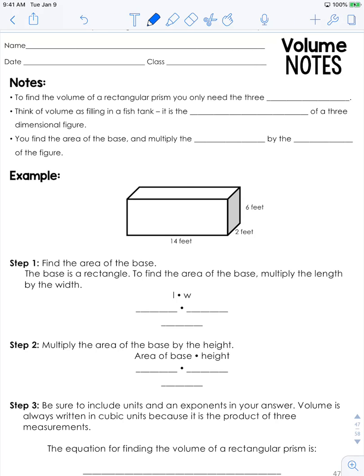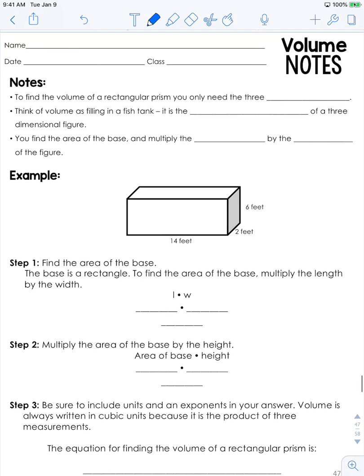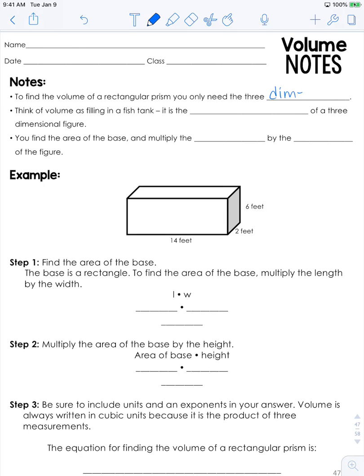And volume is really best explored with cubes or something else that you can use to actually stack and make rectangular prisms. But for right now, if you're doing this online, we're going to have to work through this this way. So to find the volume of a rectangular prism, you will only need the three dimensions. And you're going to think of volume as filling a fish tank. It is the interior space of a three-dimensional figure.